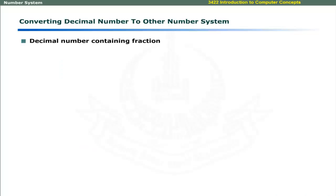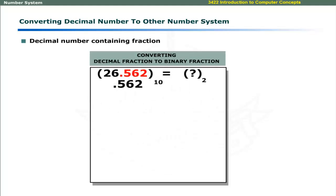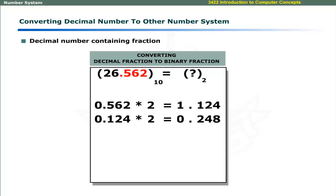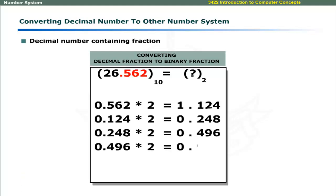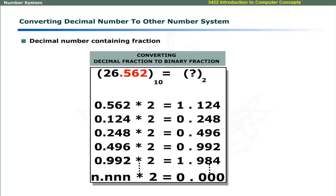To convert a decimal fraction, multiply it by the base of the required number system. Repeat this process with the fractional part only until it becomes 0 or reaches the required precision. The results of the whole number and fractional parts are then combined, with the decimal point placed in the same position as in the original decimal number.